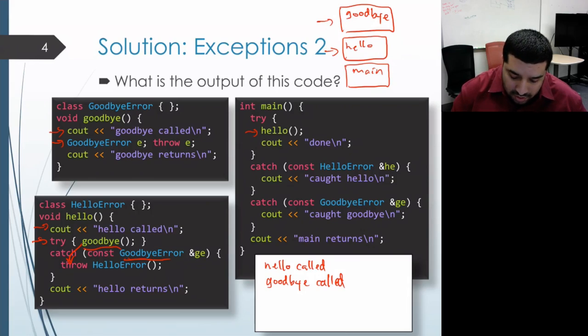So it's going to proceed to the next level of scope and see are we within a try block. And indeed, we are still within the function call to hello within the try block in main.